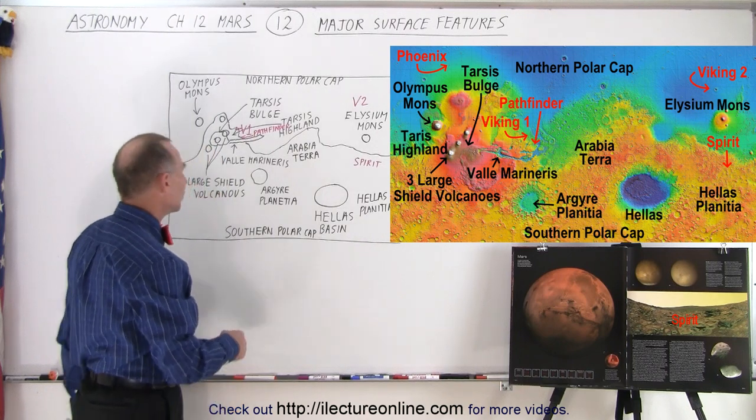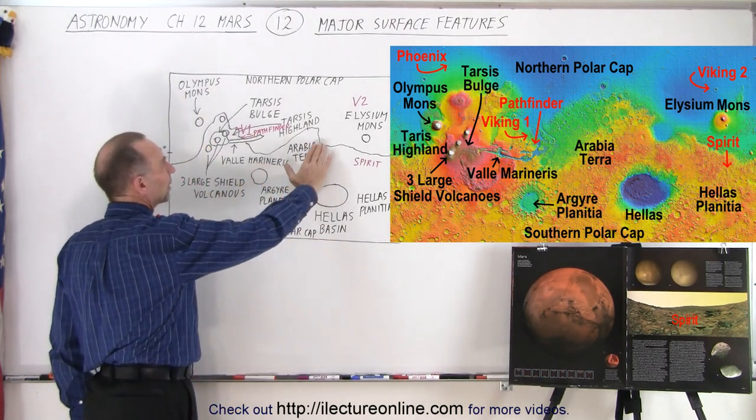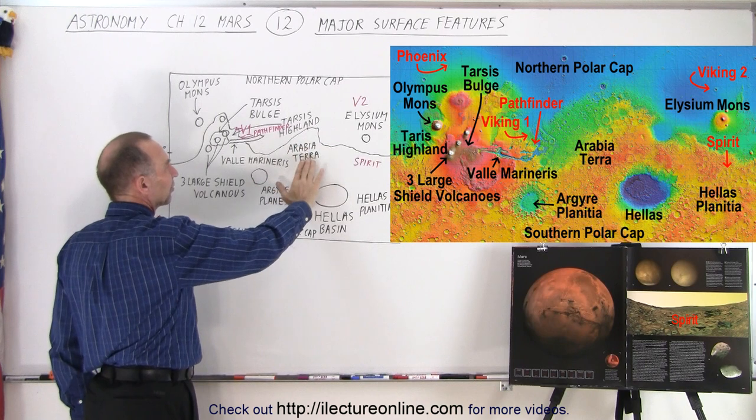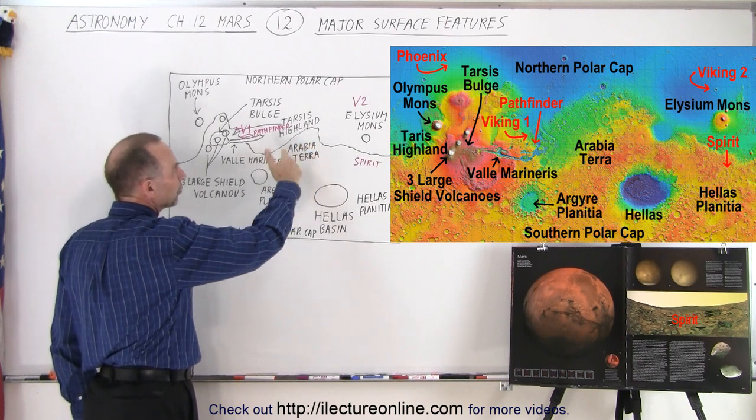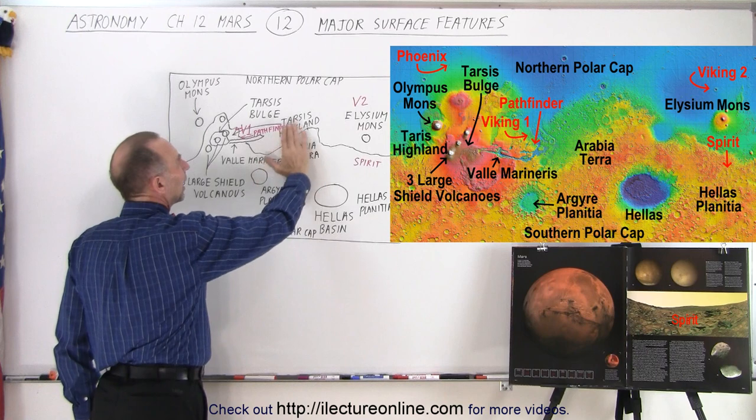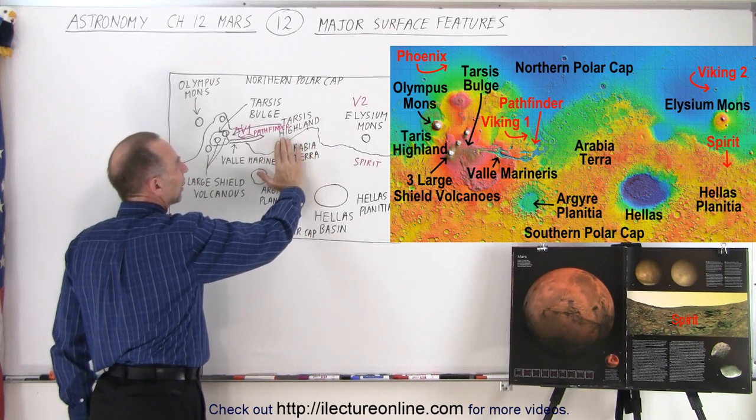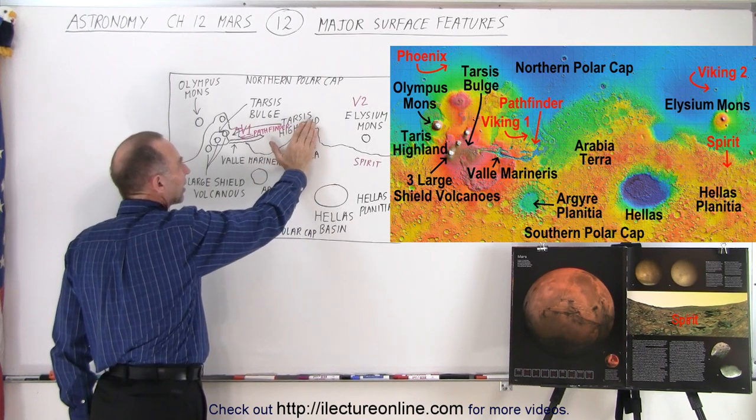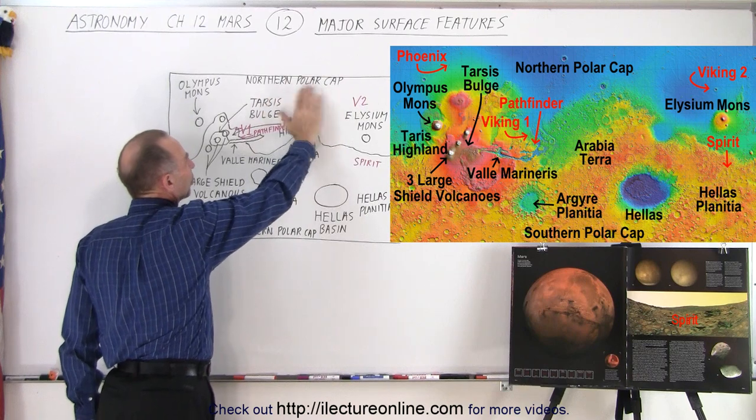Some other interesting regions we have, well, we have the Arabia Terra. Terra stands for land. And Arabia, so that's basically named after Saudi Arabia. Same name, at least. And so that's a region that is higher than the region below that.